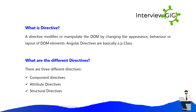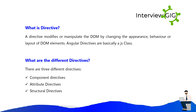What is a Directive? A directive modifies or manipulates the DOM by changing the appearance, behavior, or layout of DOM elements. Angular directives are basically a JavaScript class. There are three different types of directives: Component directives, Attribute directives, and Structural directives.